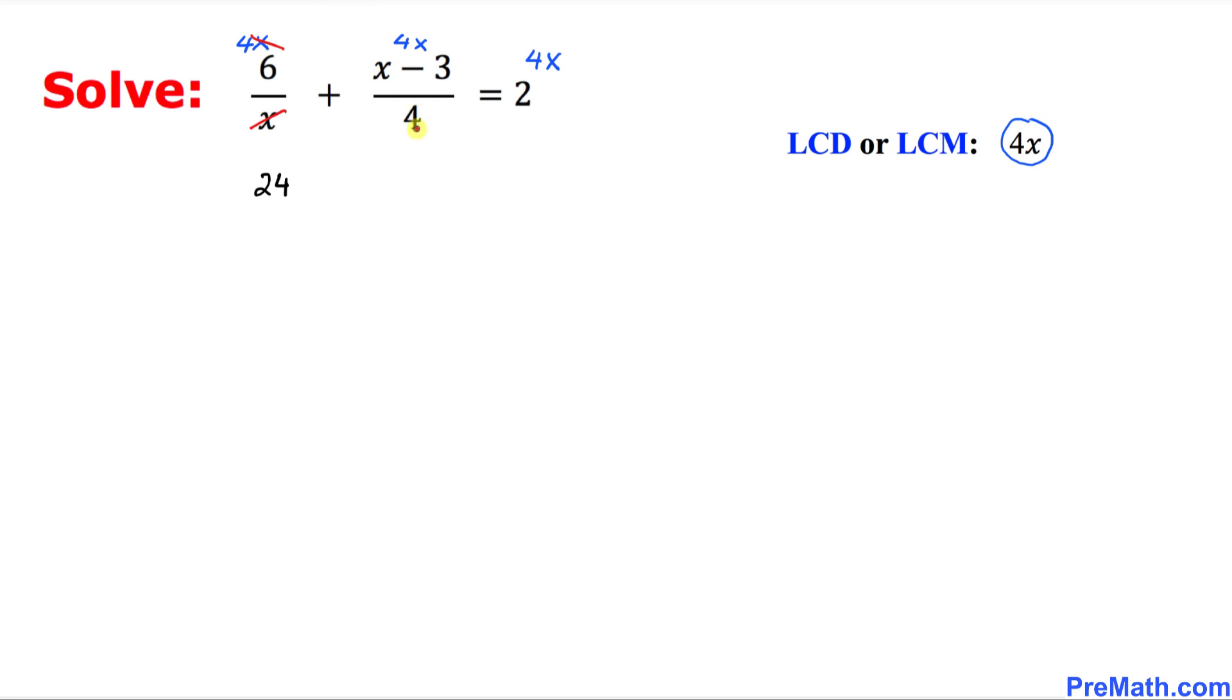And next over here, this 4 cancels out this 4. So we are left with simply x times x minus 3 equals to... let's multiply these: 2 times 4x is going to give us 8x.